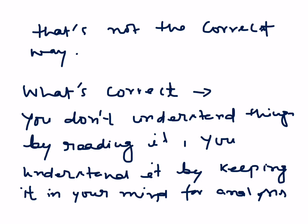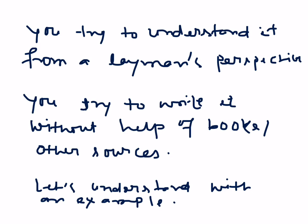So that's not the correct way. Why? What's correct? You don't understand a thing by reading it. You understand it by keeping it in your mind for analysis and later applying it. You need to try to understand it from a layman's perspective. You try to write it without help of books and other sources. And what exactly happens? You own a concept only if you keep that in your mind for a certain time. You try to understand it. You try to see it from different perspectives. You make different kinds of situations. You find that, okay, in those situations I am thinking something else. These are the situations in which it is working. These are the situations in which it should be applied. So there are so many things involved here. I mean, you cannot just read it and close your book and say you will understand geometry. It's not that simple.